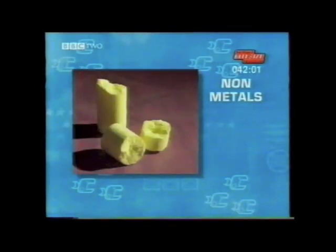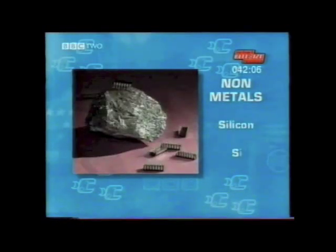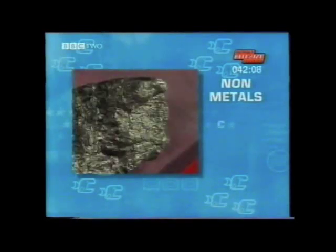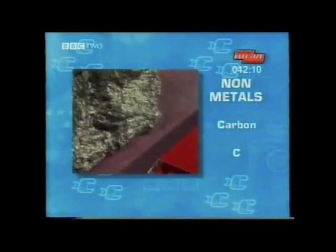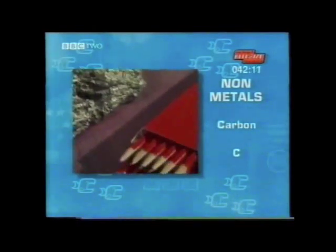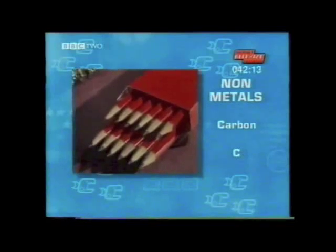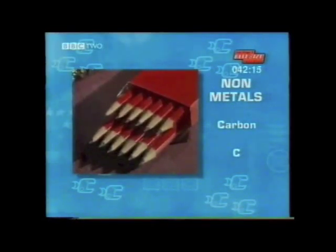Now the solids: S for sulfur, not to be confused with Si for silicon. And finally, C for carbon. If you're not sure of any of them, why not rewind and go through them again, making a note as we go. So an element is made of just one type of atom, such as carbon or gold.